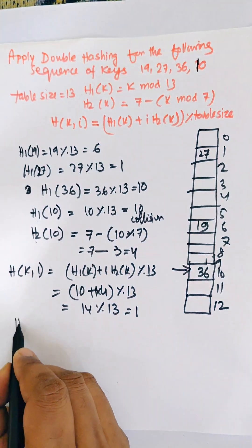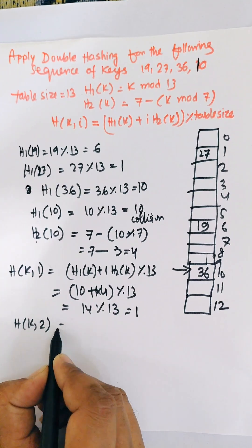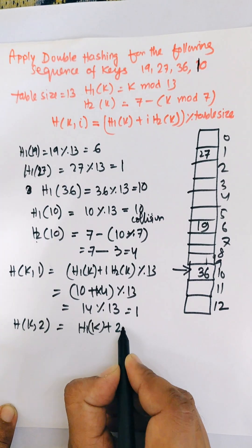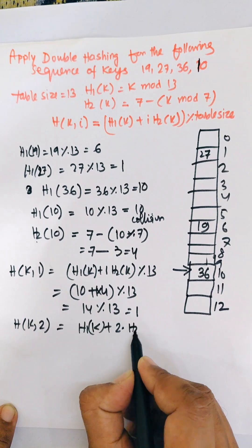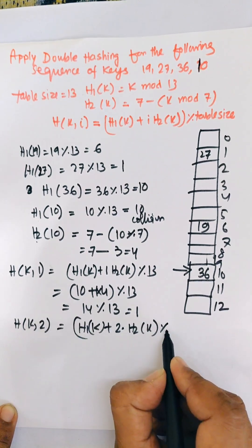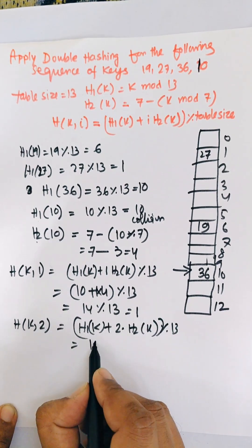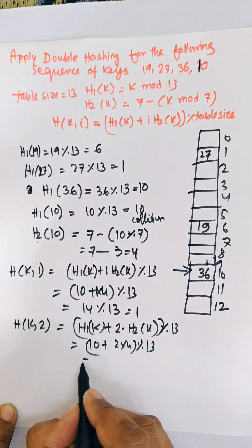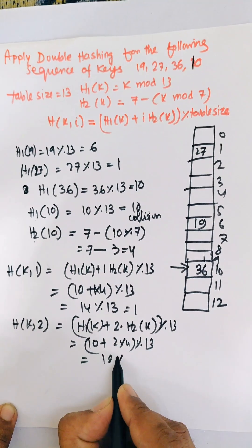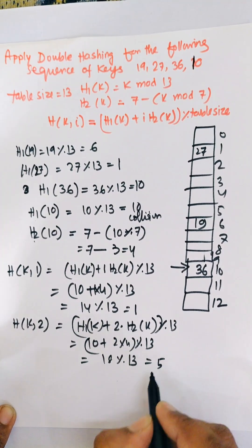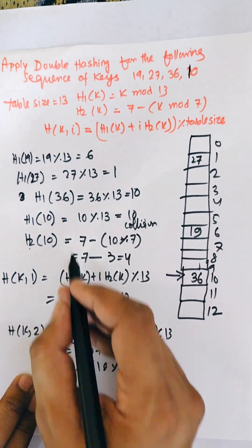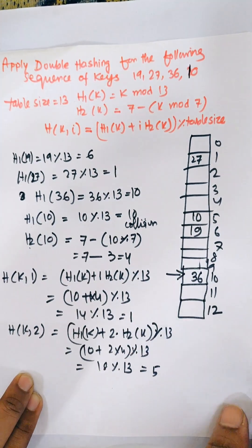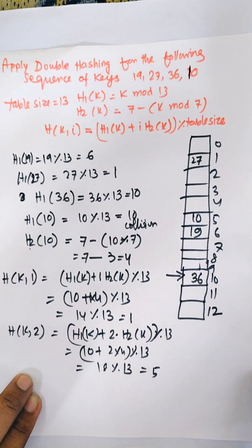Next we apply h(k, 2) = h1(k) + 2 × h2(k) mod 13 = 10 + 2 × 4 mod 13 = 18 mod 13 = 5. Location 5 is free, so key 10 is stored at location 5. This is the concept of double hashing in data structures.